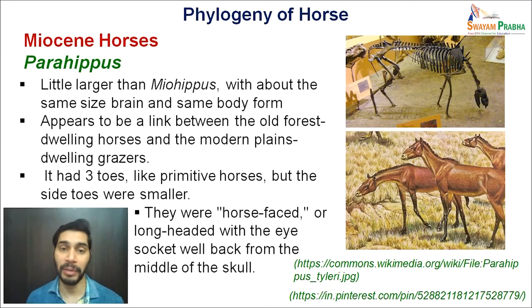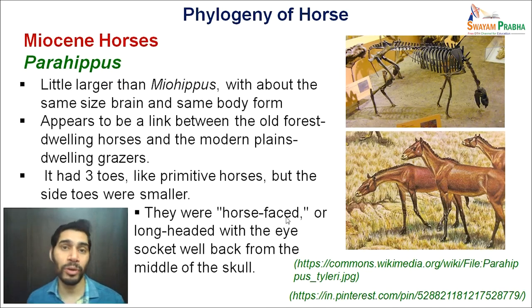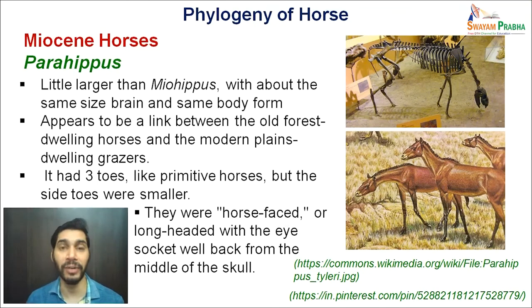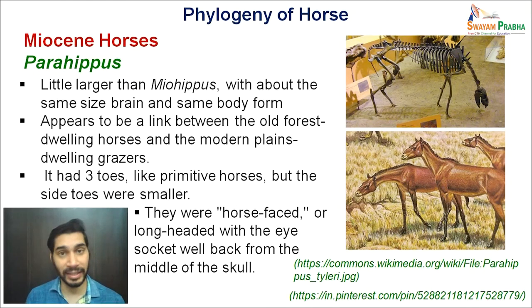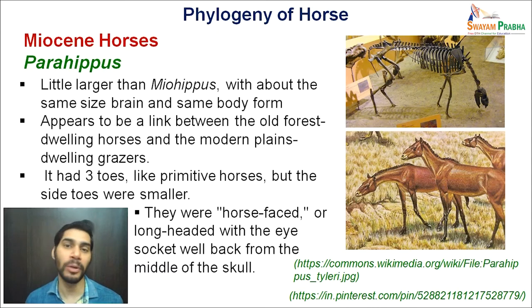Parahippus had three toes like primitive horses, but the side toes were very small. They are 'horse-faced' — their overall head has changed and looks more like a horse now, not like a hyrax or dog. It is now a long-headed form with the eye socket positioned further back from the middle of the skull. So the pre-orbital region has increased. In contrast to previous forms, the skull has changed, with the pre-orbital region pushed back so it is now more central in the skull, and the head shape looks much more horse-like.